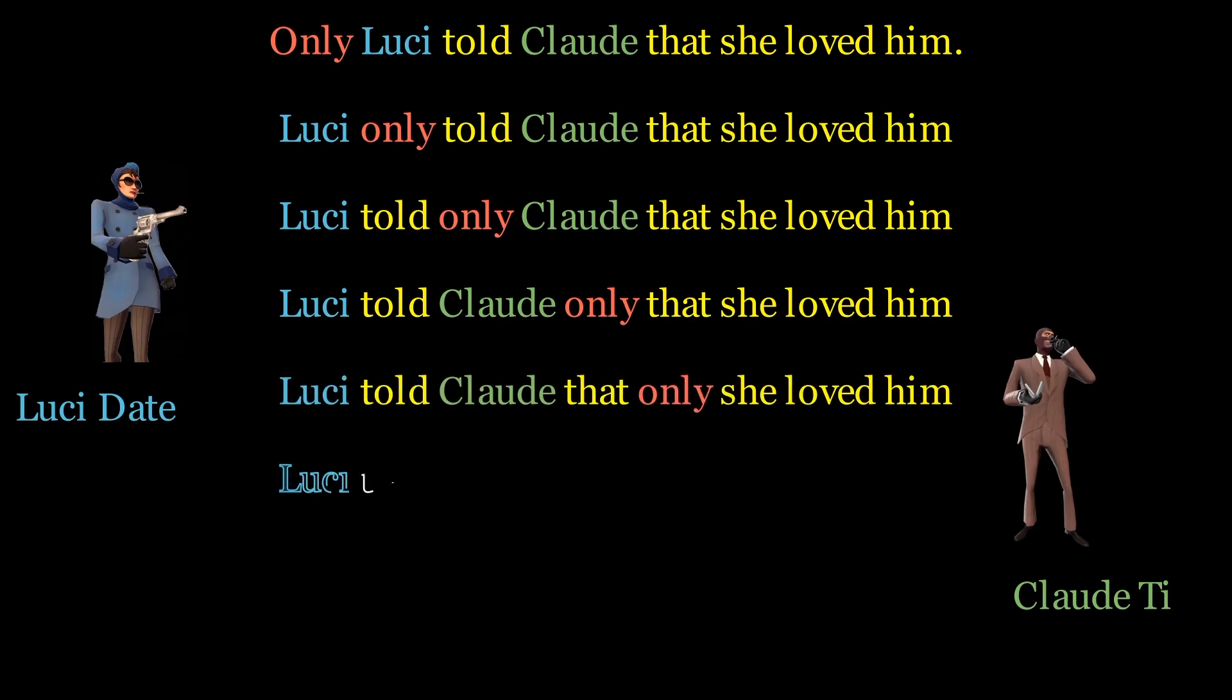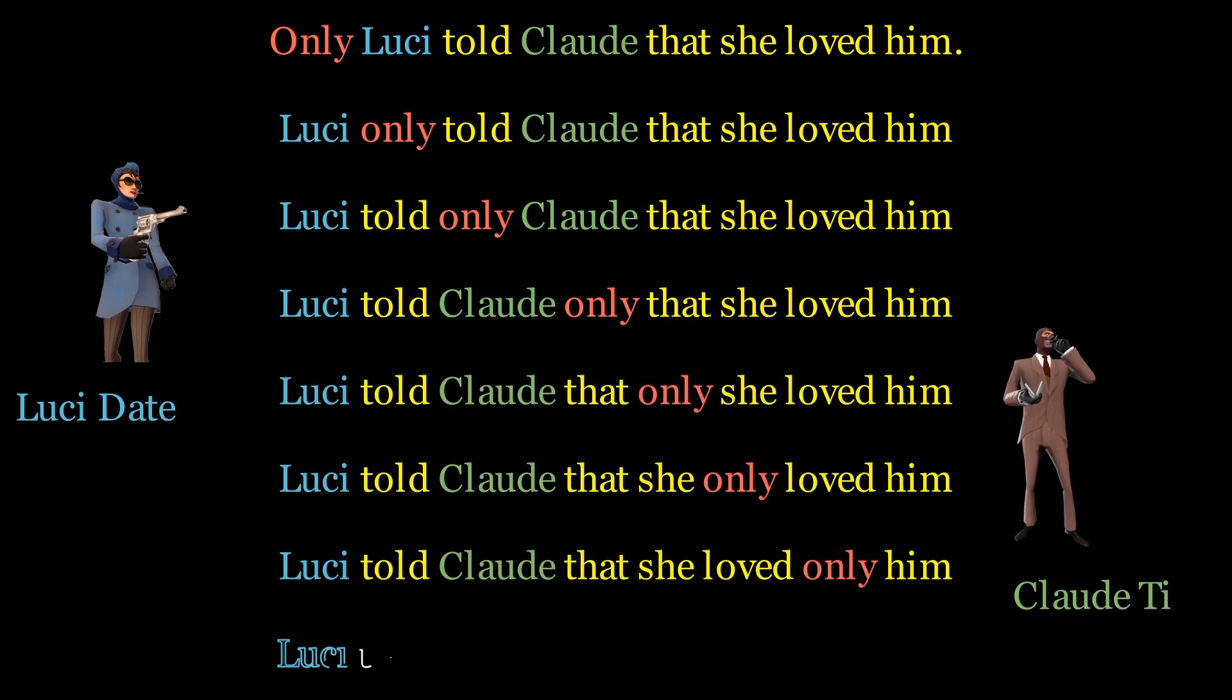Positional embeddings encode the order and relationships between different words in the sequence.